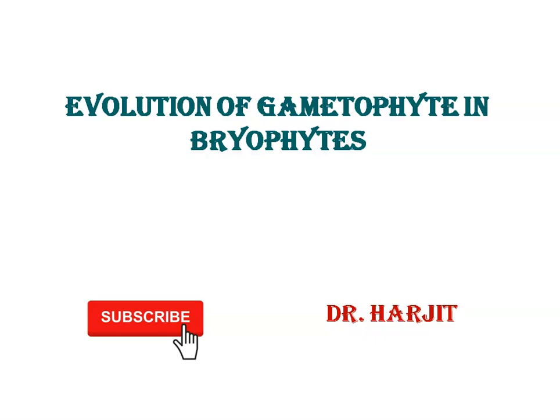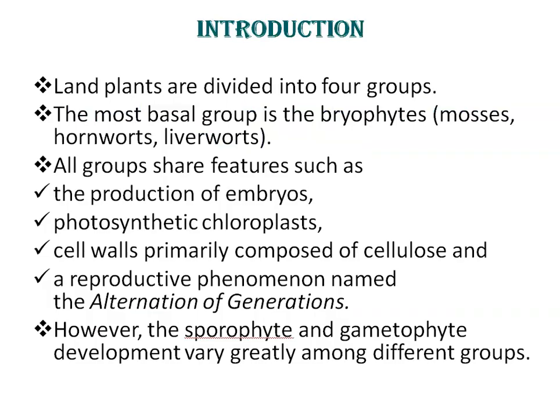Today, we will be discussing evolution of gametophyte in bryophytes. Land plants are divided into four major groups. The most basal group is the bryophytes, i.e. mosses, hornworts, and liverworts. Plants of the second group, including ferns and horsetails, have a vasculature but lack seeds.